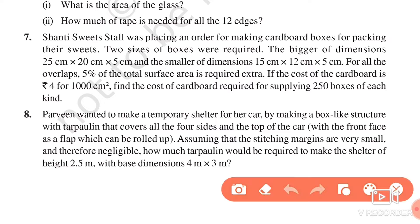Okay, we have a girl named Parveen who wants to make a temporary shelter for her car, which should look like a box and should be made from tarpaulin. Now this tarpaulin will have 4 sides and 1 top to cover the car. So the box she will make will have 5 sides.